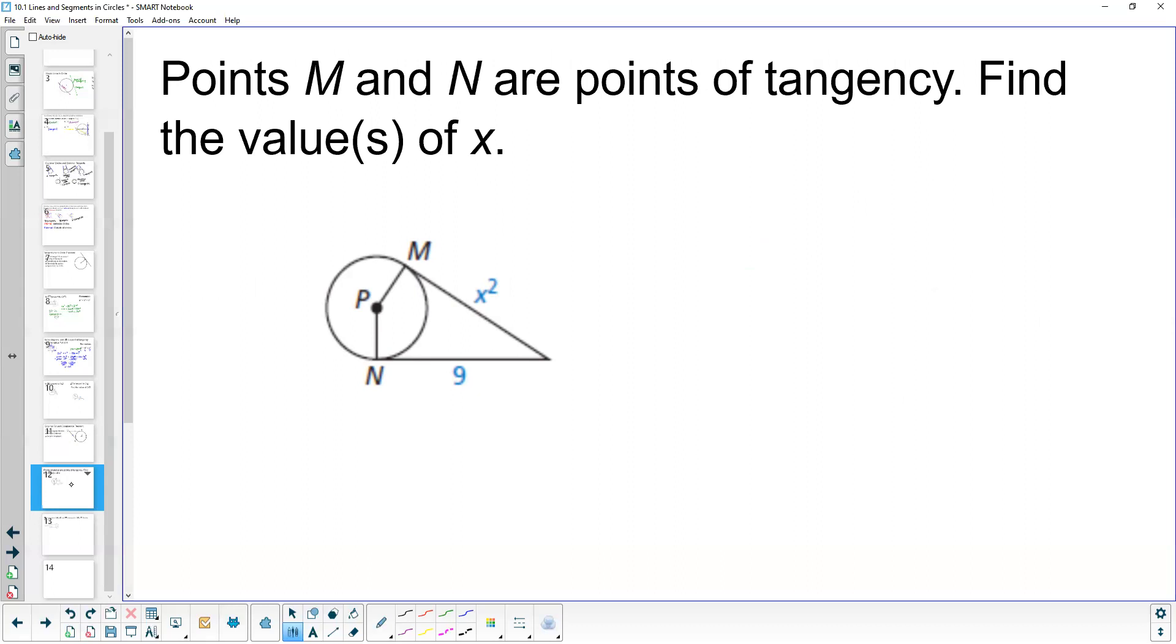Well how could we do that? Well what we can do is we can take these two values and set them equal to each other. So x squared equals 9. Well I can square root both sides here and x is going to be equal to 3 or we can say it's equal to negative 3.